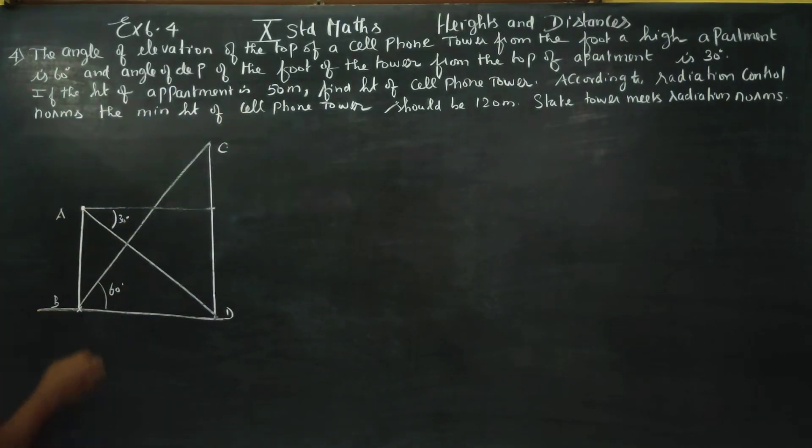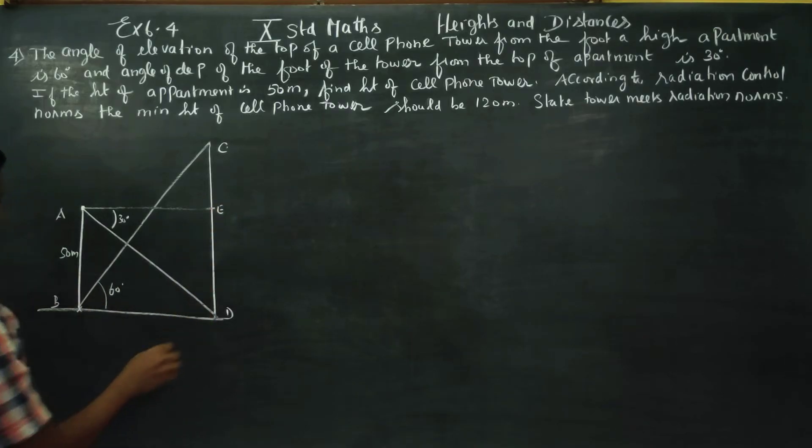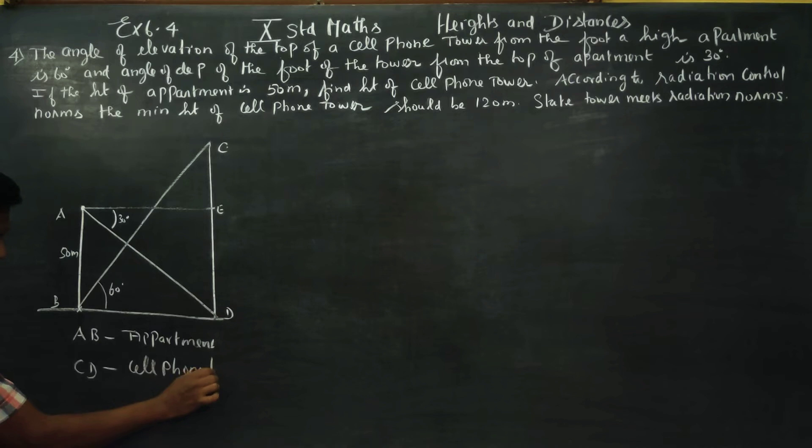Apartment height is 50 meters. Find the height of the cell phone tower. AB is the apartment, CD is the cell phone tower.